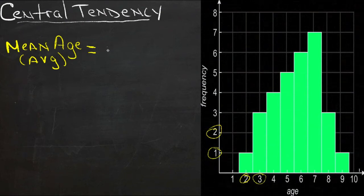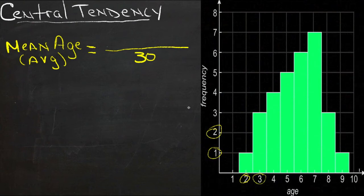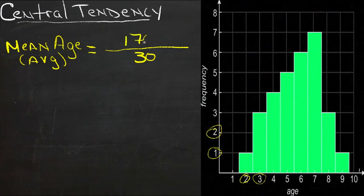So if we count up the total number of kids, we have 1 plus 3 plus 4 plus 5 plus 6 plus 7 plus 3 plus 1, that looks like 30. So there's 30 kids, and then if we add up all of their ages, we have 1 times 2, and 3 times 3, and 4 times 4, and so on, and we add up all the number of years total, we had a total of 170 years.